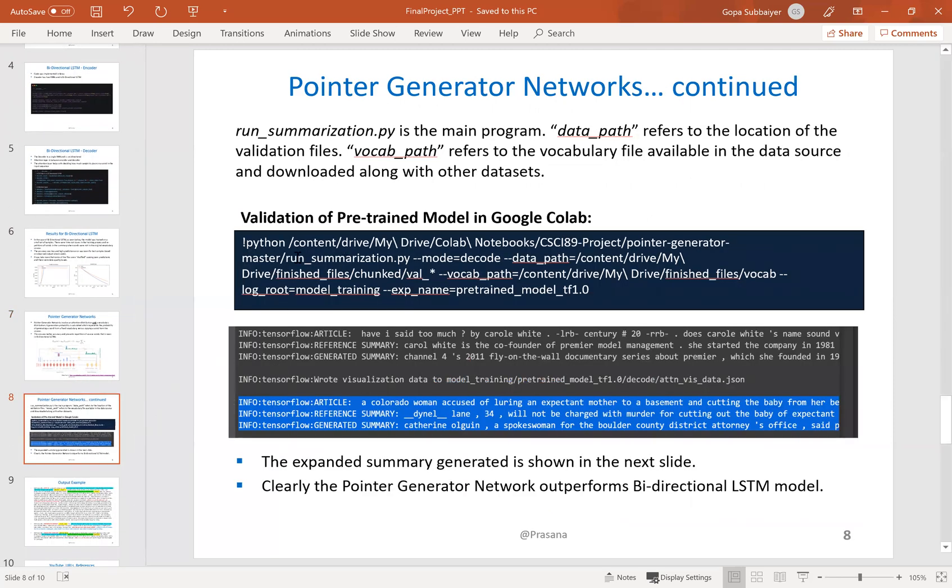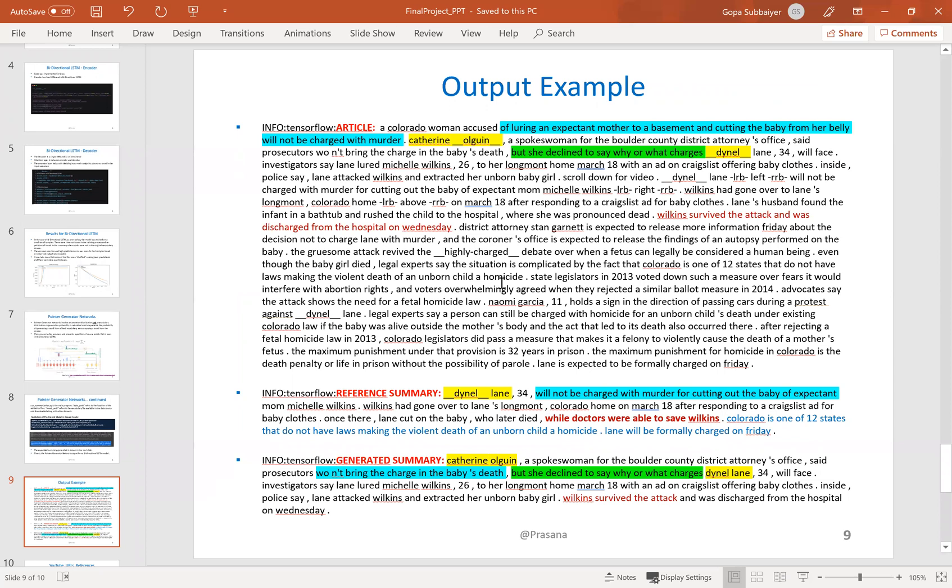Slide number eight shows the code used to generate the pointer generator network, and slide number nine shows the output from a pointer generator network. Based on the summary, the pointer generator network clearly outperformed the bi-directional LSTM on the data set we used. Thank you.